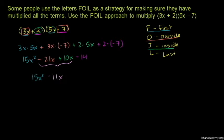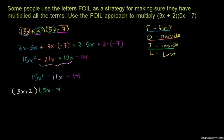We can simplify the results of the FOIL method. If you want an alternative, you can use the distributive property. With 5x minus 7, you will multiply each term separately.